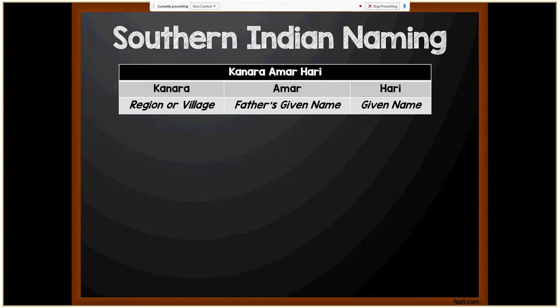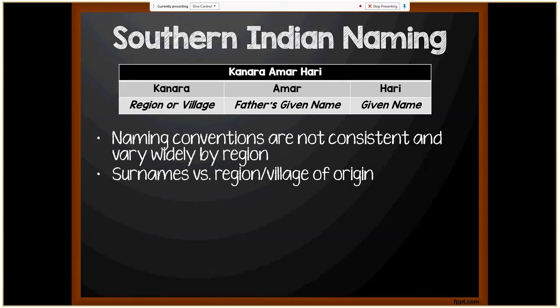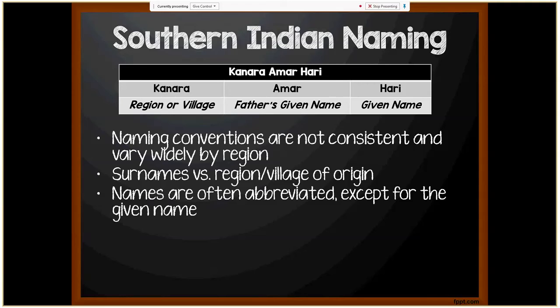For southern Indian naming, in the example Kanara Amar Hari: Kanara is the region or village, Amar is the father's given name, and Hari is the given name. Naming conventions are not consistent and vary widely by region — primarily in the southern states of Andhra Pradesh, Tamil Nadu, Karnataka, and Kerala. There may not be a surname; instead there may be the name of the family's region or village of origin. Names are often abbreviated except for the given name — so the person's name might appear as K.A. Hari instead of Kanara Amar Hari. Women generally take their husband's surname upon marriage.